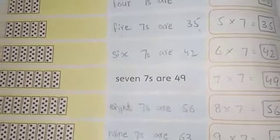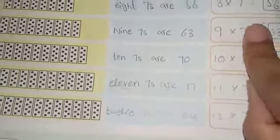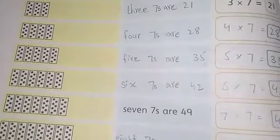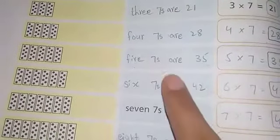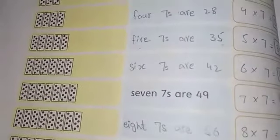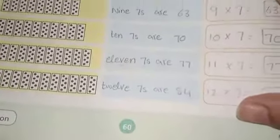اسی طرح سے آپ پورا page number 60 پہ اپنا table write کریں گے — maths کی counting میں بھی اور انگلش میں بھی آپ اس طرح سے اس کو write کریں گے۔ اس طرح سے آپ spelling write کریں گے اور اپنا page number 60 complete کریں گے۔